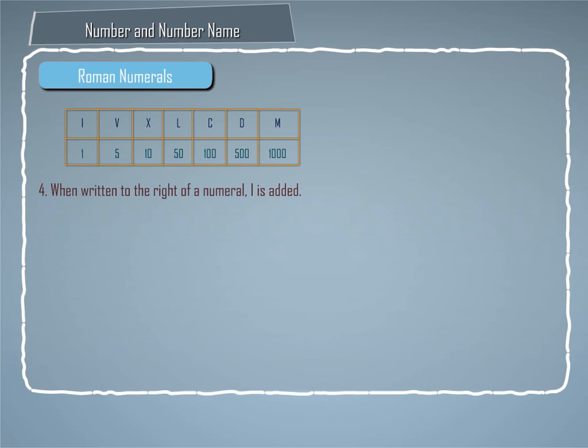Rule 4: When written to the right of a numeral, I is added.